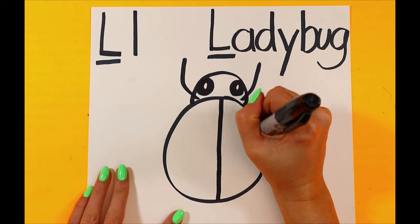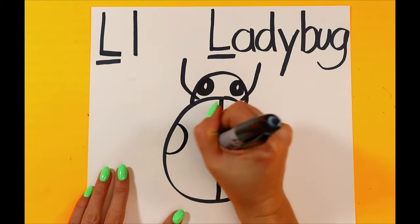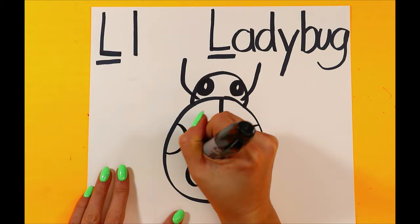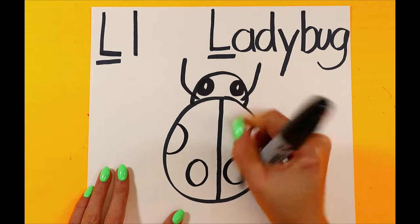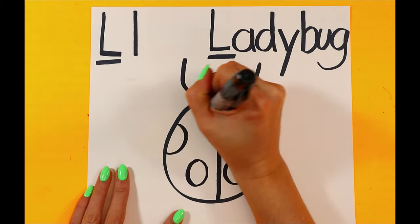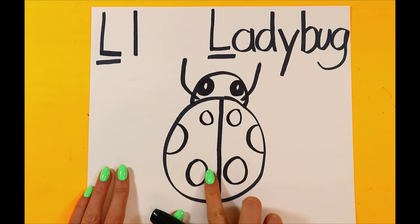Next, we're going to draw one line down the back. Let's draw spots by adding circles on our ladybug. And whatever we do on one side, we do the same on the other, so mine are the same on each half.